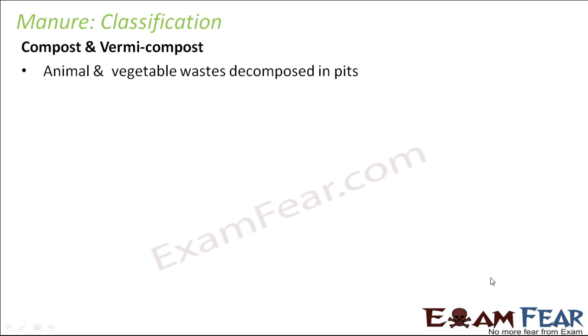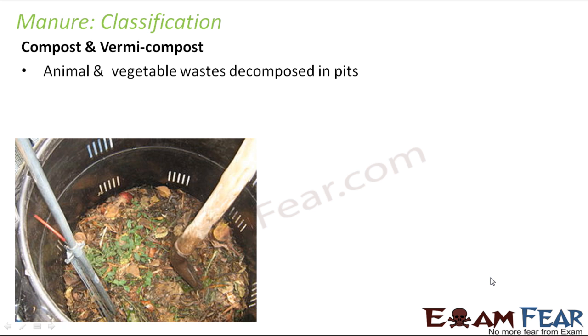Let us look at the various types of manure. The first one is compost and vermicompost. Animal and vegetable wastes are decomposed in pits to form compost and vermicompost. Wastes from animals, dead plants, or rotten plant parts are placed into a depression in the soil and left for decomposition. Over a period of time it forms compost and vermicompost, which is rich in organic matter and nutrients, and is extremely beneficial to the plants.